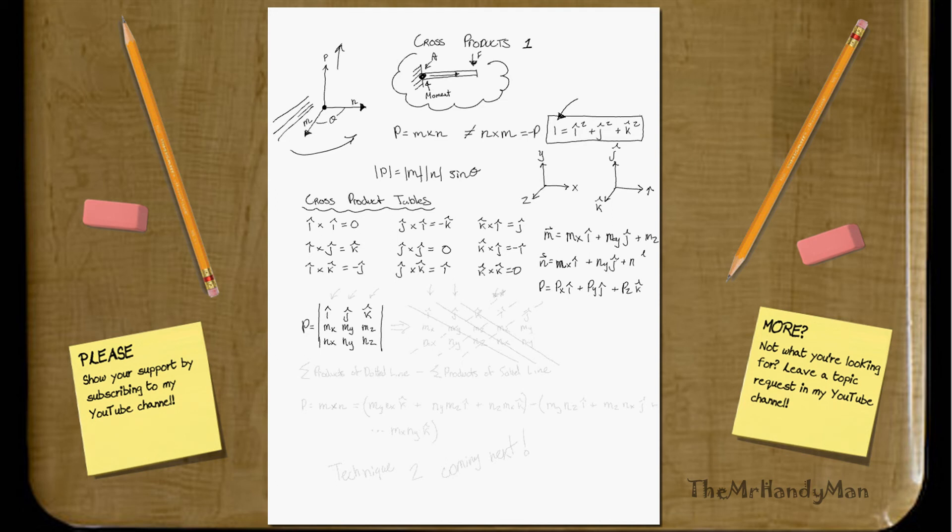Basically, what we're doing here is we have our first component, I. We have our second, J, K, okay? And then, basically, the contributing factors of both vectors M and N.